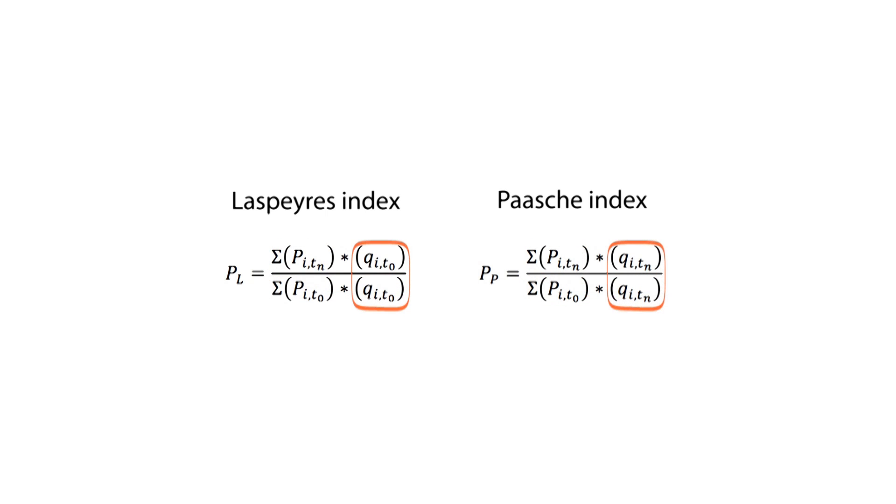The main difference is the quantities used. The Laspeyres Index uses a past period as the base year, whereas the Paasche Index uses the current period as the base year with respect to a future period.